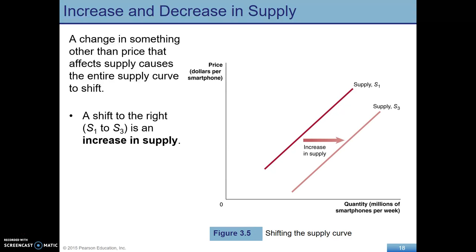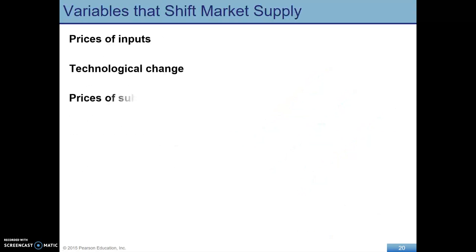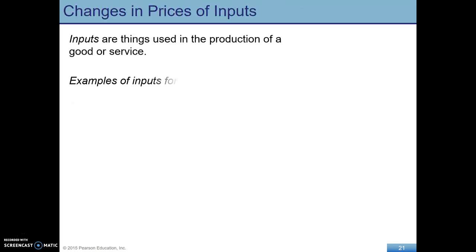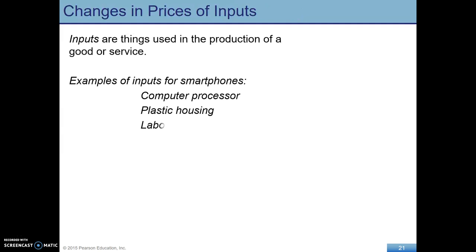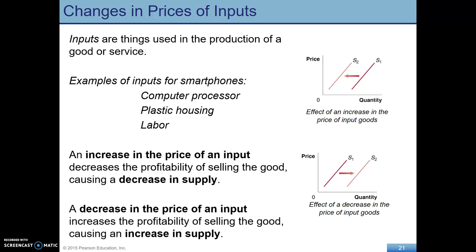A change in one of those supply shifters — anything besides the price of the smartphones — is going to cause a shift of the supply curve, either an increase to the right or a decrease to the left. Here are shifters of the supply curve — you need to know these. For example, inputs used in the production of a good: for smartphones, inputs would be a computer processor, the plastic housing, and the labor involved. An increase in the price of an input leads to a decrease in supply; a decrease in the price of the input leads to an increase in supply, which is a shift to the right.